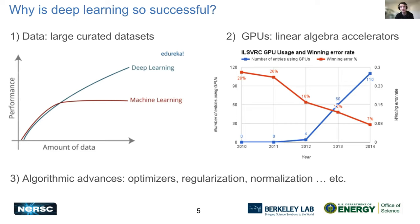Besides these two main factors, there's also been a lot of hard work by the community doing algorithmic advances, developing different optimizers, and different ways of regularizing or normalizing deep learning training. All three of these combined have contributed to the excellent performance of deep learning.